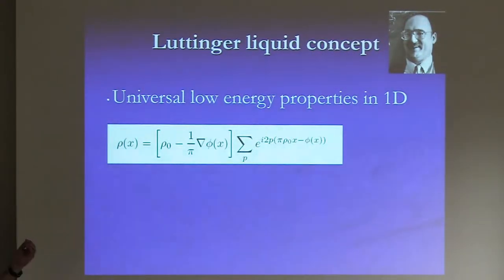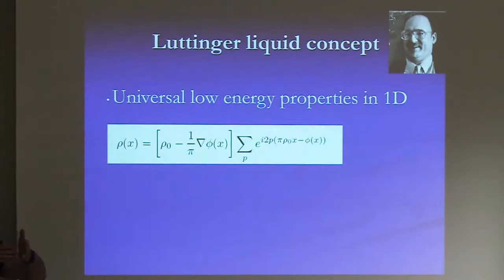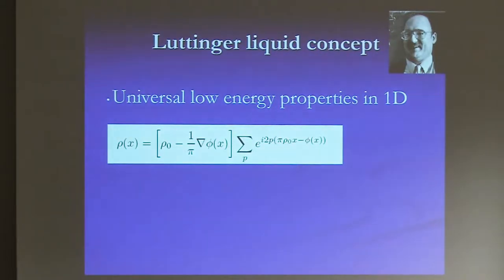You can view this expression as a Fourier decomposition of the density. The p=0 term says the density is the divergence of field phi — the hydrodynamic expression, like the displacement from equilibrium in a crystal. There are also higher harmonics (p=1, p=2...) corresponding to density waves that you can shift by changing phi. This phi field is slowly varying and allows a hydrodynamic description, while the higher harmonics reconstruct delta functions at particle positions.